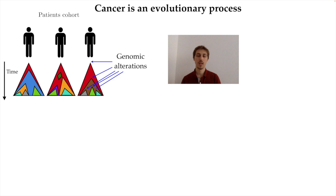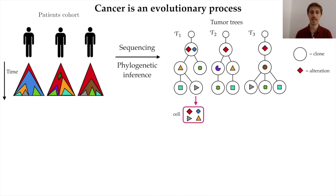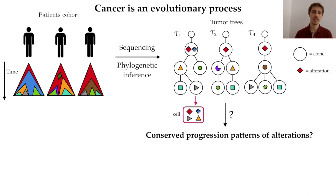Cancer is an evolutionary process driven by the accumulation of genomic alterations over time, which drive tumor growth into a collection of clones — sets of cancer cells with the same set of alterations. A critical challenge in precision medicine is to understand the clonal composition of tumors and how they evolve. What is possible today is to infer a phylogeny, or tumor tree, for each tumor, in which a node is a clone containing all alterations unique to that clone. A cell belonging to a clone also carries all alterations found in all ancestor nodes, as shown in the example on this slide.